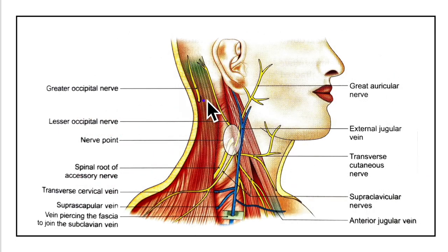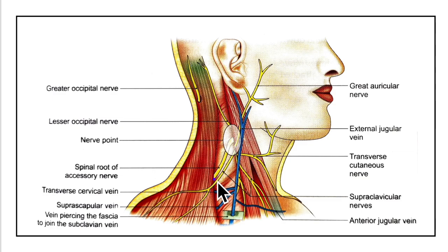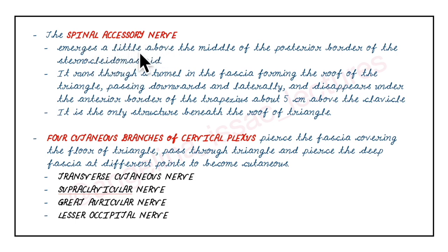In this diagram you can see the trapezius muscle and the sternocleidomastoid. The spinal root of the accessory nerve emerges a little above the middle of the posterior border of the sternocleidomastoid. It runs through a tunnel in the fascia forming the roof of the triangle, passing downwards and laterally, and disappears under the anterior border of the trapezius about 5 cm above the clavicle. It is the only structure beneath the roof of the triangle.